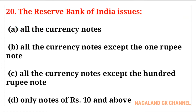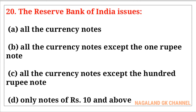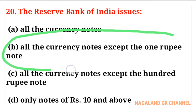Question number twenty: The Reserve Bank of India issues — the correct answer is option number B, that is all currency notes except the one rupee note.